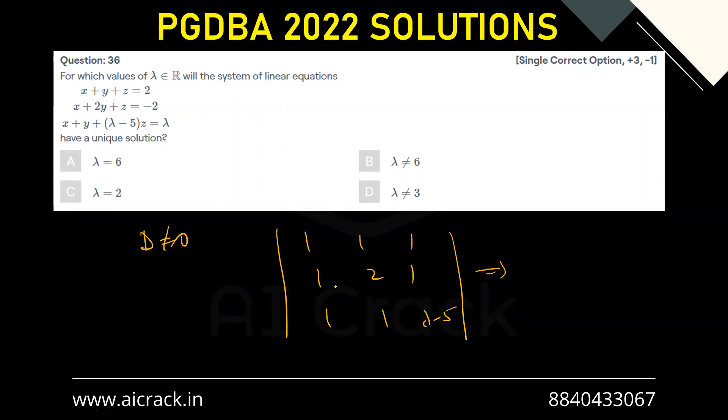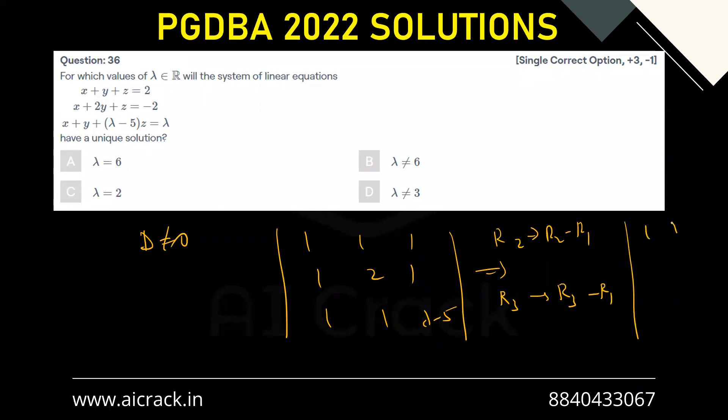We can apply row transformations over here. So R2 goes to R2 minus R1, R3 goes to R3 minus R1. So that would give us determinant 1, 1, 1, 0, 1, 0, 0, 0, lambda minus 6.